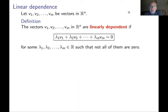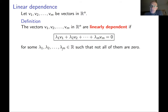If we have m vectors in n-dimensional space, v1, v2, up to vm, we say that these vectors are linearly dependent if there exist a linear combination of these vectors which is zero, and such that at least one coefficient in this linear combination is not zero. So by definition, these vectors v1, v2, vm are linearly dependent if you can find m real numbers lambda 1, lambda 2, lambda m, such that this sum is zero, but at least one number among lambda 1, lambda 2, lambda m is not zero.